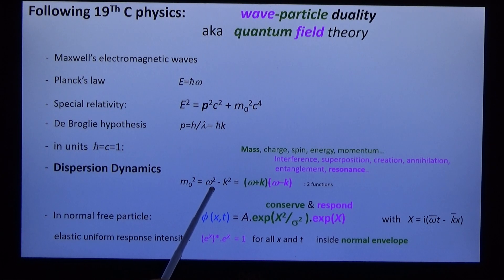The mass squared is equal to the angular frequency squared minus the wave vector squared. This separates us into two parts.